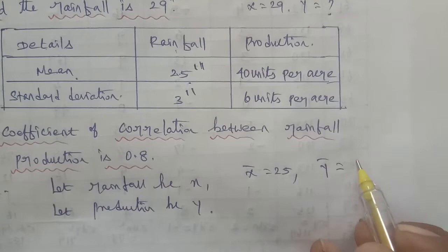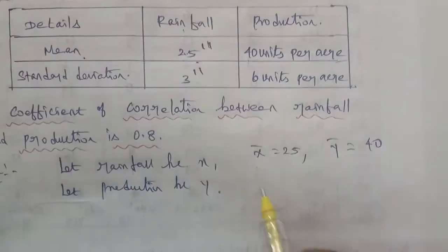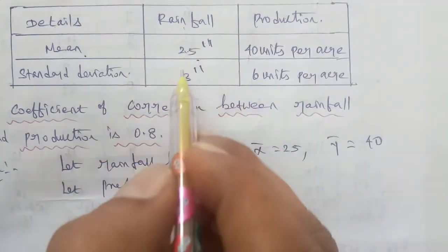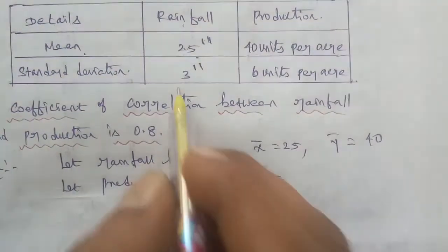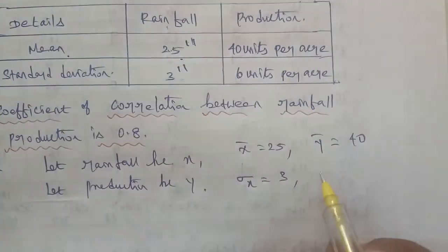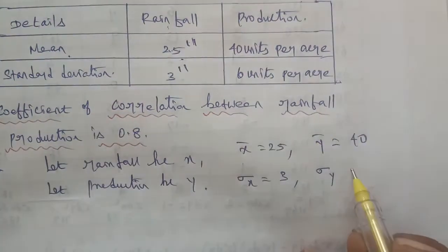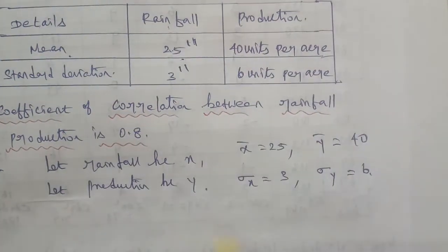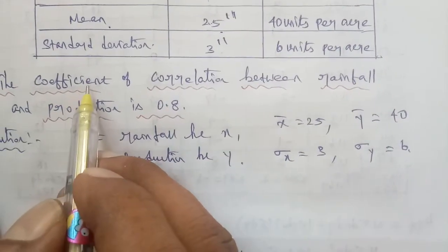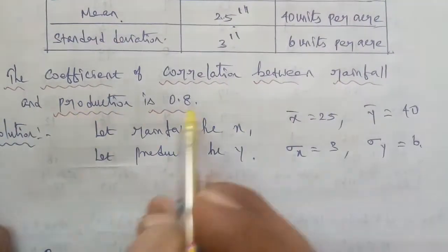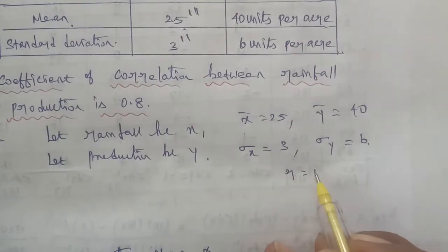The y-bar value is 40. Standard deviation notation is sigma. For rainfall x, the standard deviation sigma x is 3. For production y, the standard deviation sigma y is 6. The coefficient of correlation between rainfall and production is r equal to 0.8.